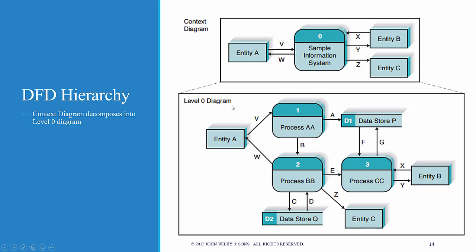I don't know why they go from context to level zero instead of level one, but that's the convention. A level zero diagram shows all of the major processes at the first level of numbers — one, two, three — these are major processes in this sample information system. It shows the data stores, the external entities, and the data flows among them. The purpose of the level zero DFD is to show all the major high-level processes and how they relate to each other and to stored data. All process models have one and only one level zero DFD.